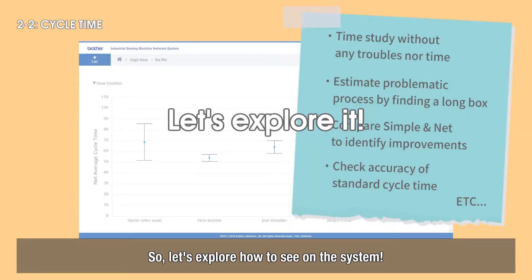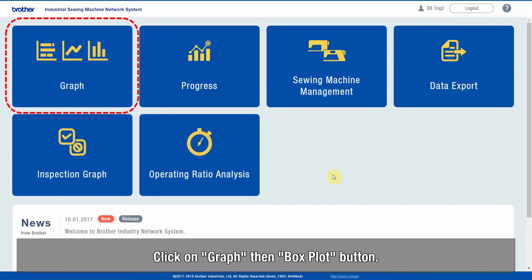So, let's explore how to see on the system. Click on Graph, then Box Plot button.